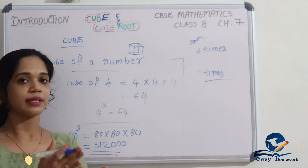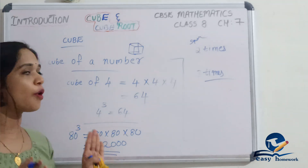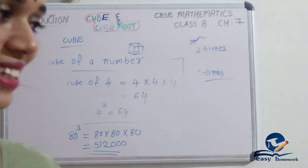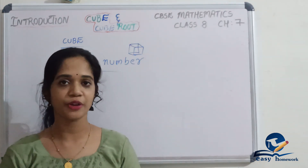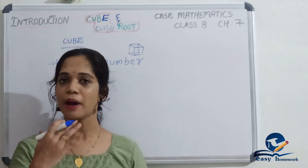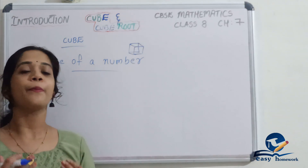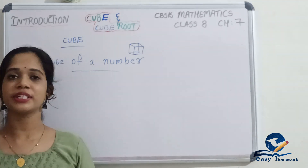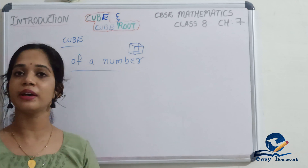A number multiplied by itself three times is called its cube. If you have cube values for numbers 1 to 10, you can memorize them by heart. These are useful for competitive exams. We can use squares and cubes for 1 to 10 variable numbers. If you are using a daily device, memorize these by heart.